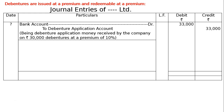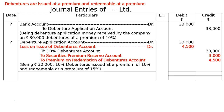Since the debenture is redeemable at a premium of 15%, we now proceed. Debenture application account debited Rs 33,000. Loss on issue of debentures account debited — premium on redemption means the extra amount we are paying on redemption is our loss at the time of issue. That is 15% of Rs 30,000, which is Rs 4,500. To 10% debentures account, that is Rs 30,000.